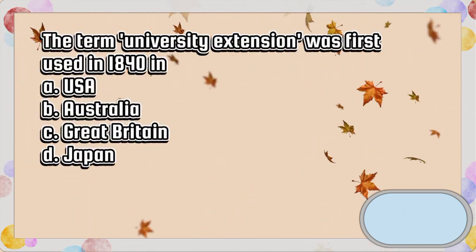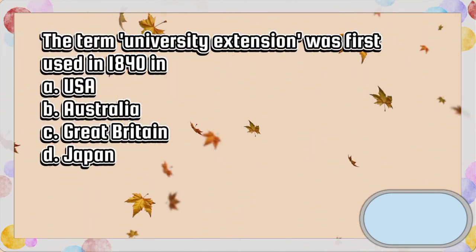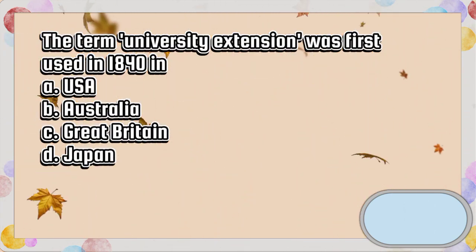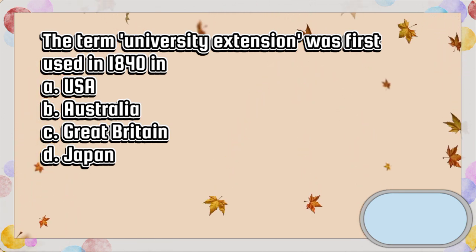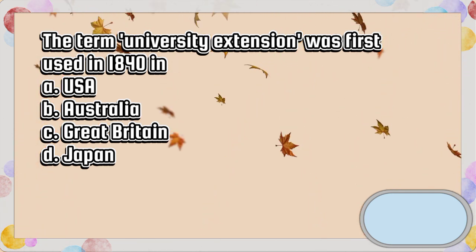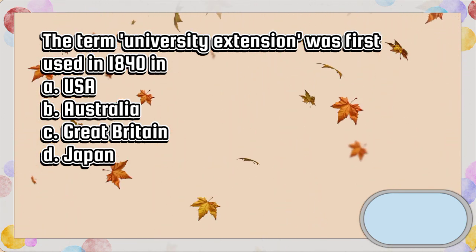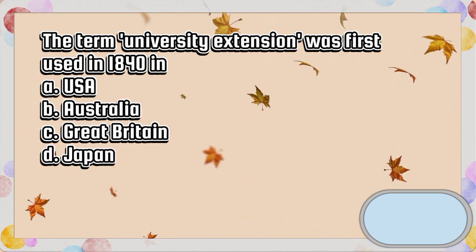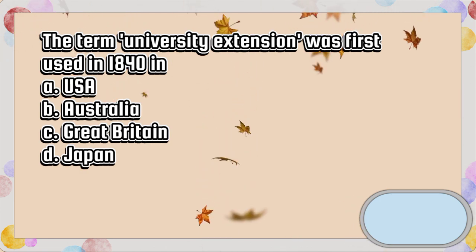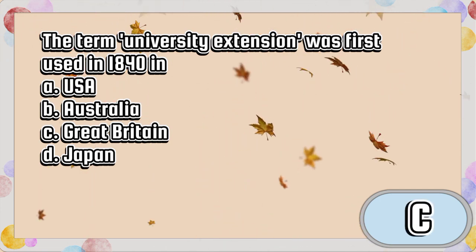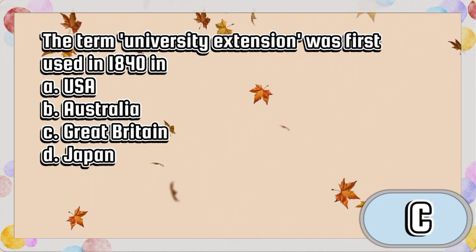The term 'university extension' was first used in 1840 in. A. USA. B. Australia. C. Great Britain. D. Japan. The answer is letter C.